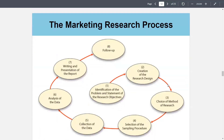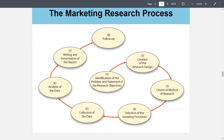The marketing research process: 1) identification of the problem and statement of research objectives; 2) creation of research design; 3) choice of methods of research; 4) selection of sampling procedure; 5) collection of data; 6) analysis of the data; 7) writing and presentation of the report; 8) follow-up. Creating the research design is the plan to answer all marketing research objectives. Descriptive studies answer who, what, where, when, and how — helps define relationships between variables, determines trends, brand loyalty, and customer profiles.